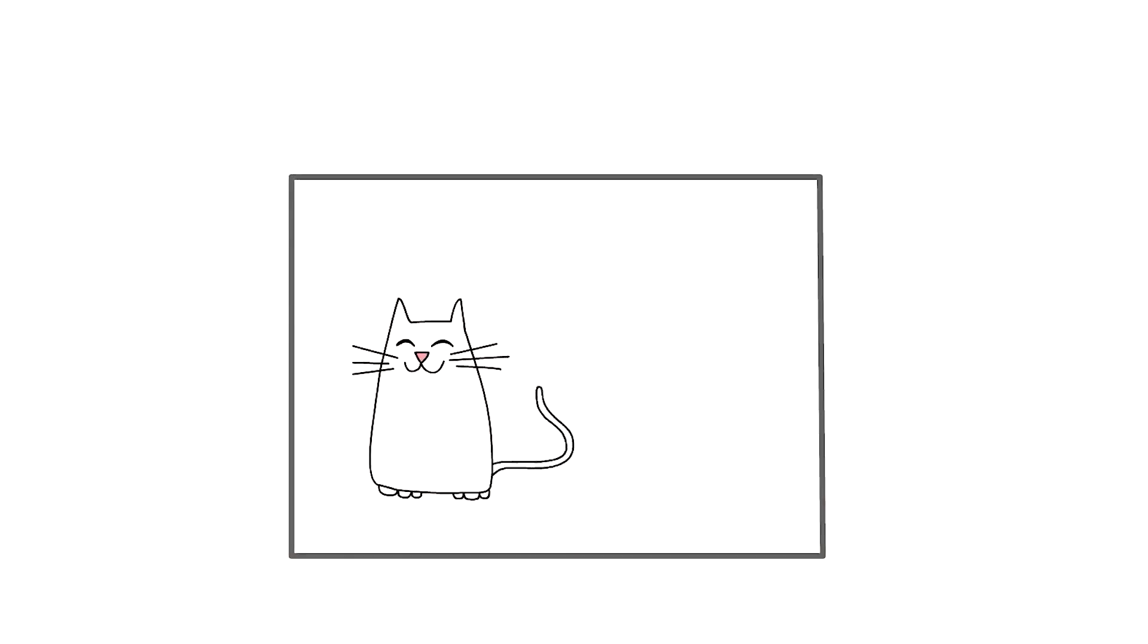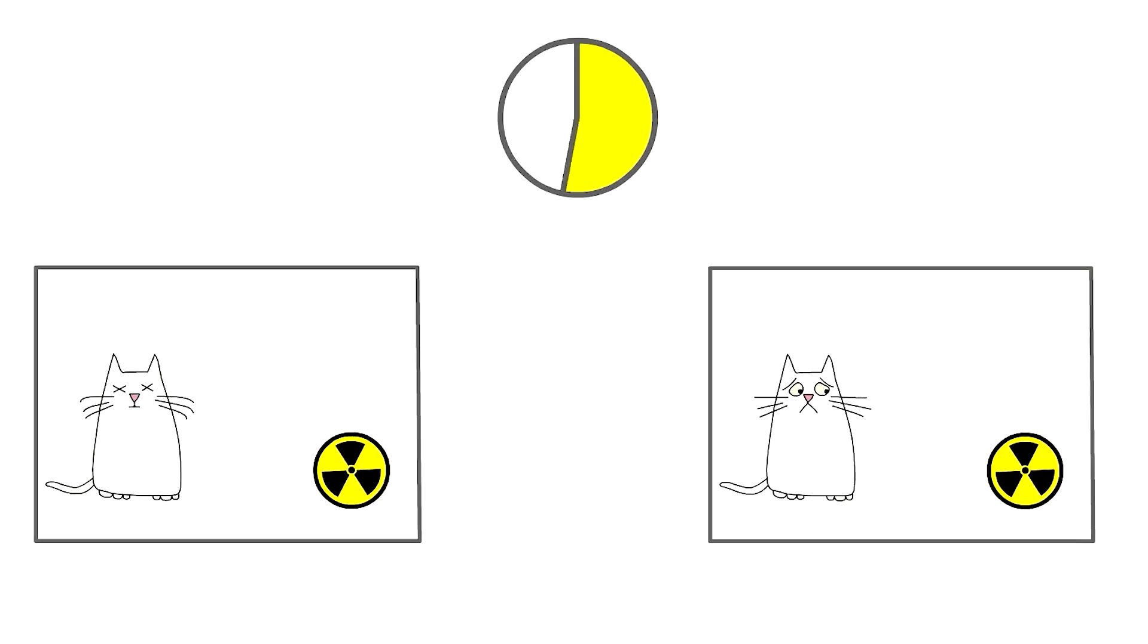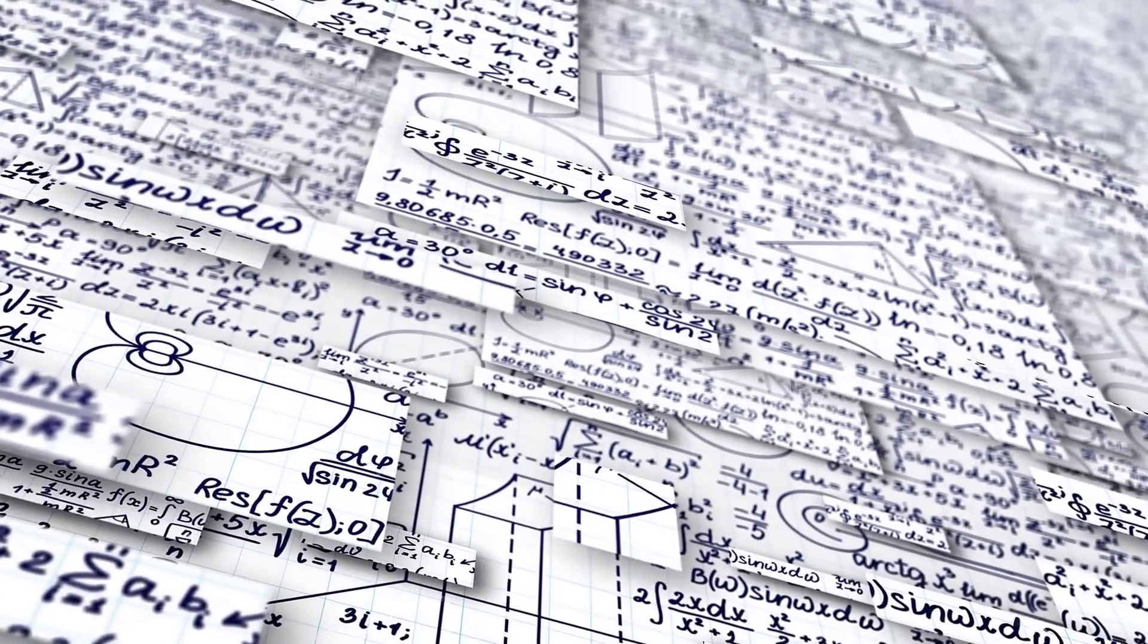Think of Schrodinger's famous cat experiment, where a cat was locked inside a box. Inside the box, there is a radioactive source and a poison device that will be triggered if an atom decays.